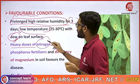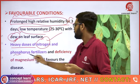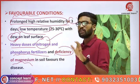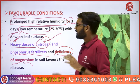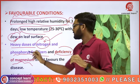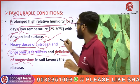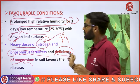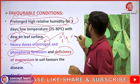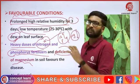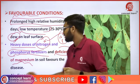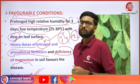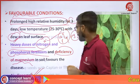Additional favorable conditions include heavy dose of nitrogen and phosphorus fertilizers, and deficiency of magnesium. Magnesium deficiency makes it easy for leafspot to aggregate. These leafspot diseases are spread by air dispersal.